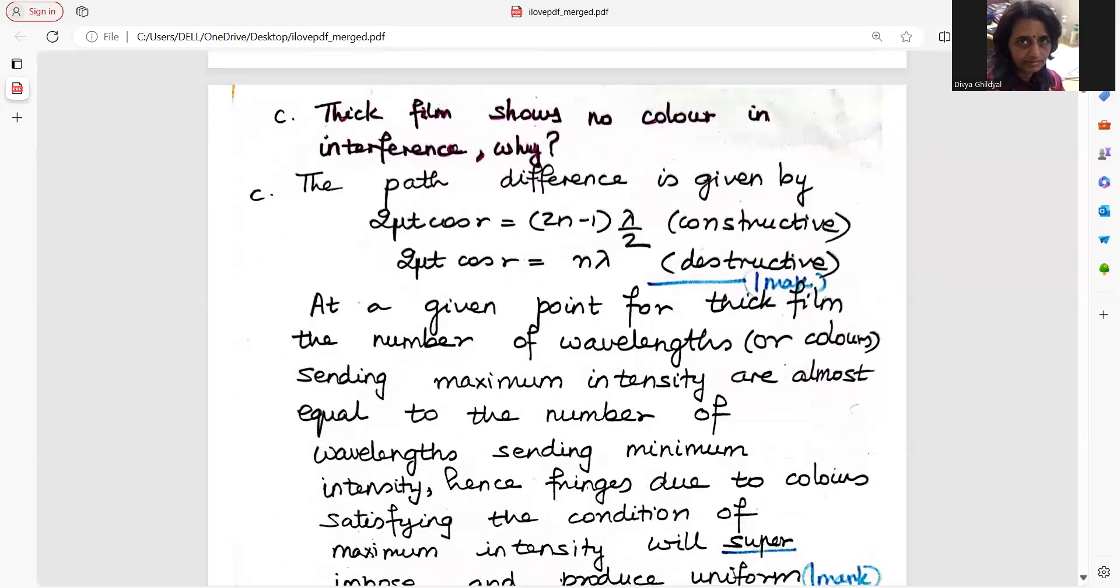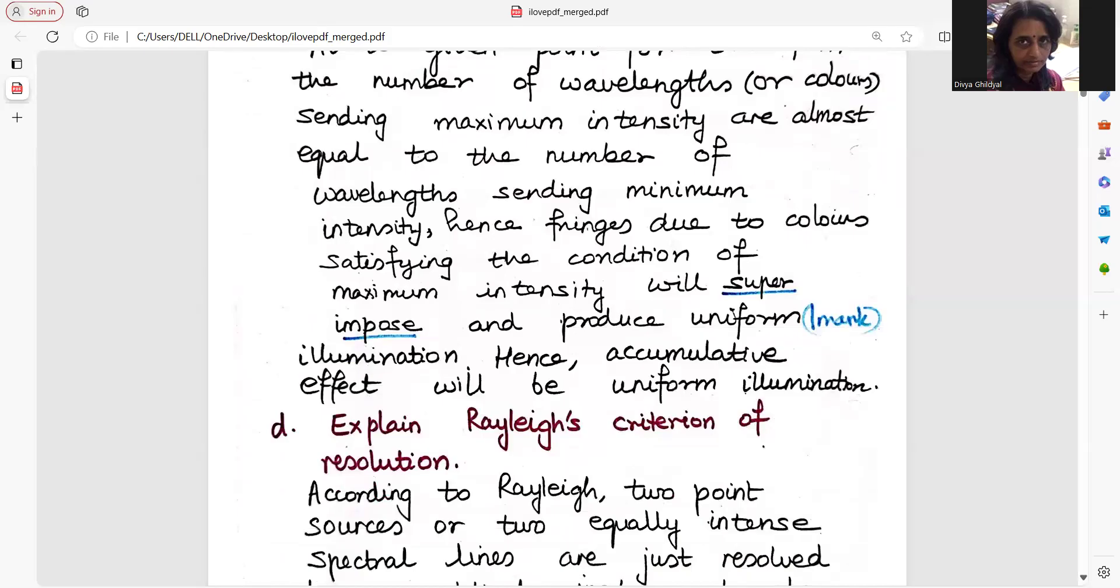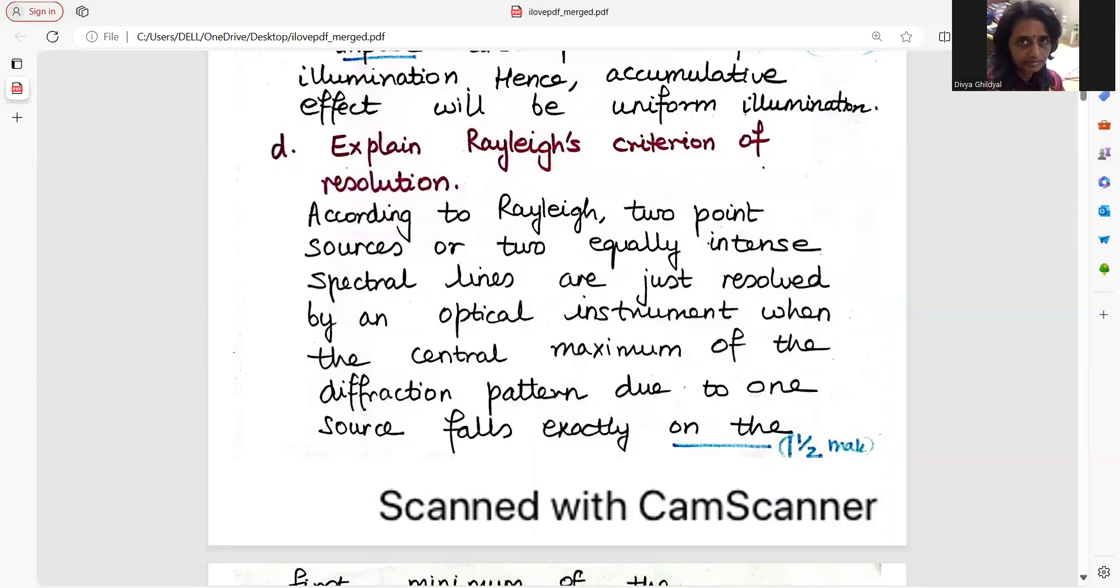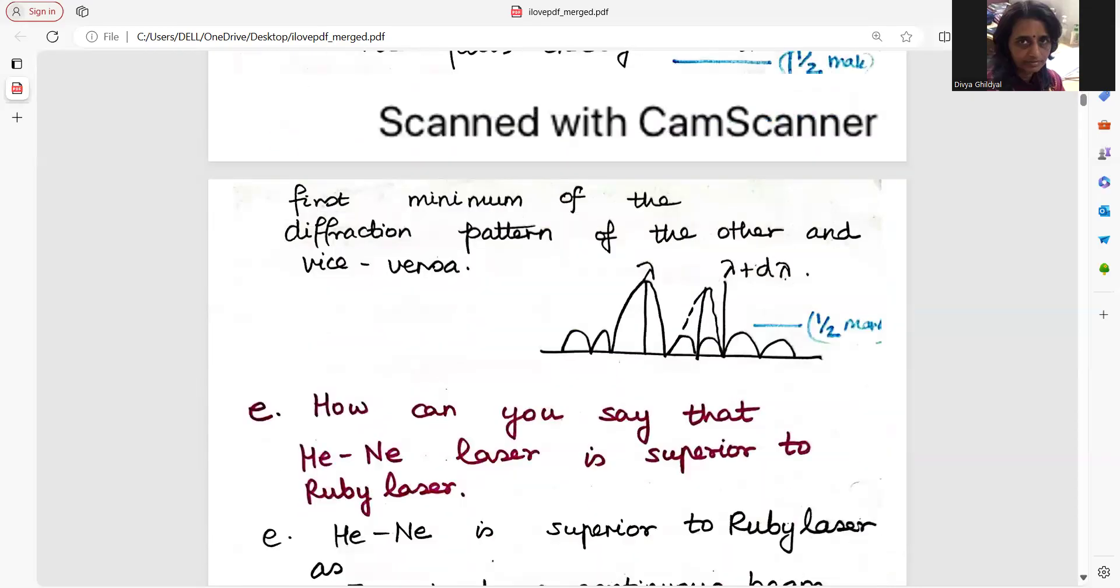Maxwell's fourth equation included the time varying fields, and this modification was done by Maxwell. Then Ampere's law consisted of the static part and the time varying fields. If you write the equation and explain it like this, you can fetch your marks. Next, thick film shows no color in interference. Basically what happens is that in thick films, the number of wavelengths sending maximum intensity is equal to the number of wavelengths sending minimum intensity. Hence, fringes due to color satisfying the condition of maximum intensity will superimpose and produce uniform illumination.